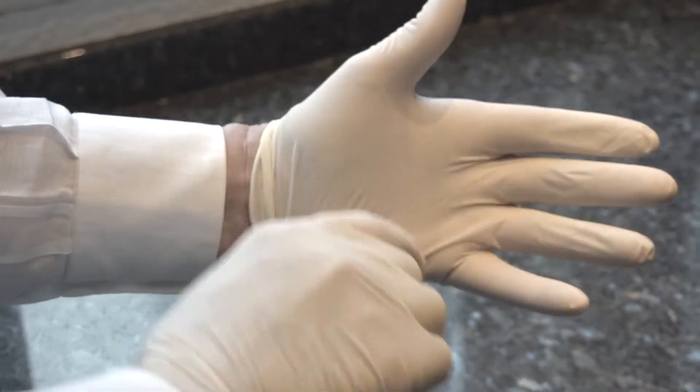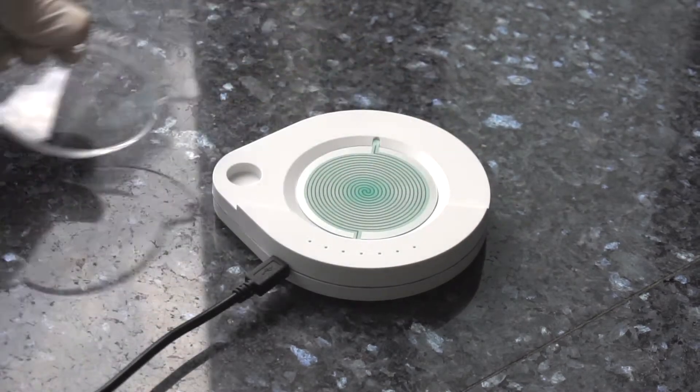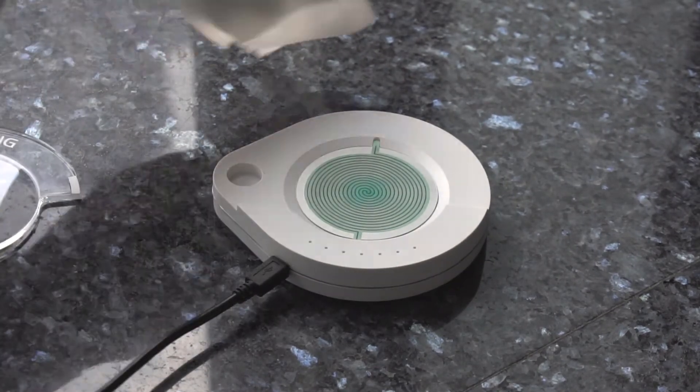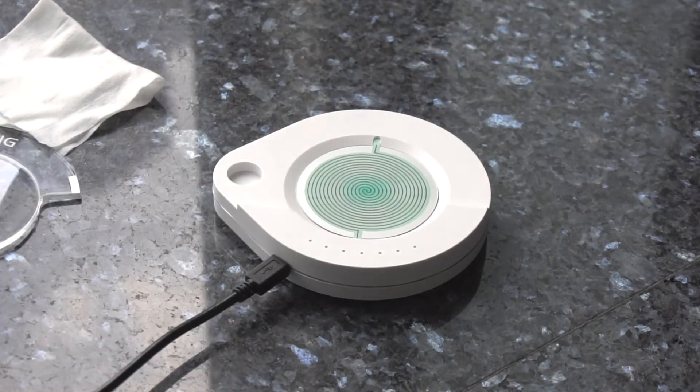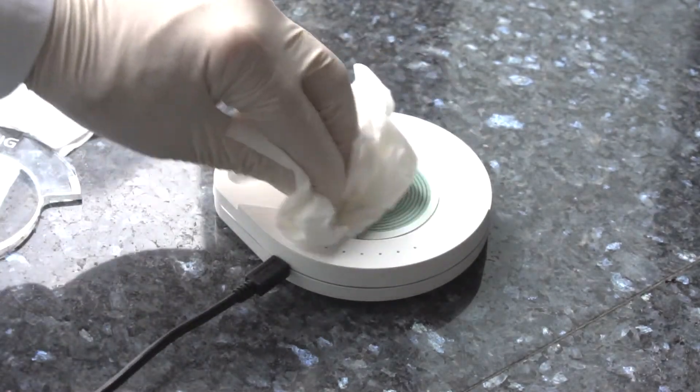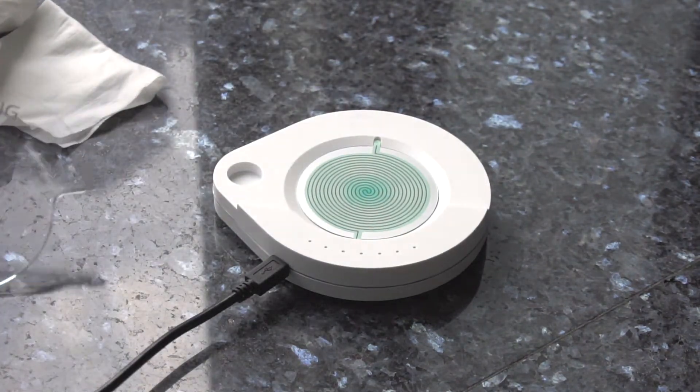Using latex-gloved hands, wipe over the S-Drive Spectrum Coil plus the clear shielding plate with an antibacterial wipe followed by a dry tissue. Also do this to the tips of the special tweezers.